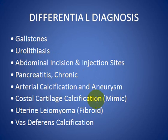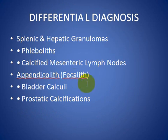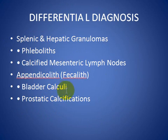Costal cartilage calcification is a normal variant that can mimic calcification. Other causes include uterine fibroid, vas deferens calcification, splenic and hepatic granulomas, phlebolith, calcified mesenteric lymph node, appendicolith or faecolith, bladder calculi, and metastatic calcification. There are some other rare causes as well.